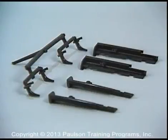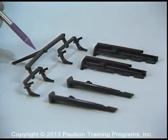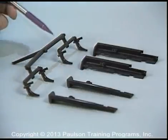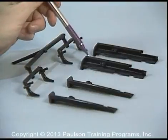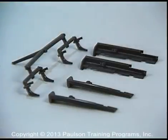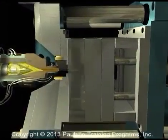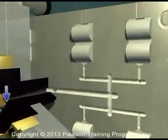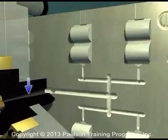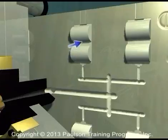Now we'll look at the plastic flow passages in the mold. We saw this part earlier. Here is the sprue, runner, gate, and the part. Inside the mold, we use the same names. Here is the sprue, runner, gates, and the cavities which will form the plastic part.